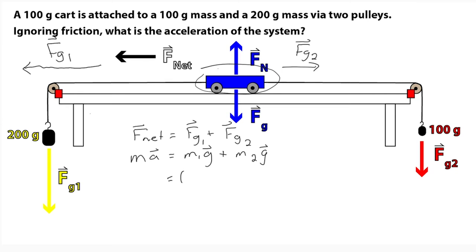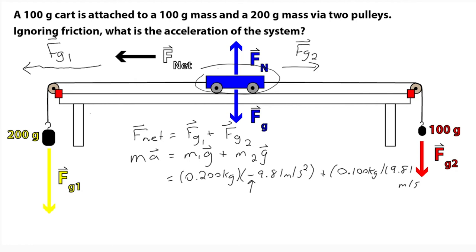Now I can start filling in numbers. I've got to convert from grams to kilograms for my masses and put in the acceleration due to gravity. Notice I've put in the acceleration due to gravity as negative 9.81 m/s² for the first mass — because that force of gravity one is a leftward, negative vector. For the other mass I'm putting it in as positive. This gives negative 1.962 N for that first force. I like making the acceleration due to gravity positive or negative to keep track of vectors as I work through the problem.